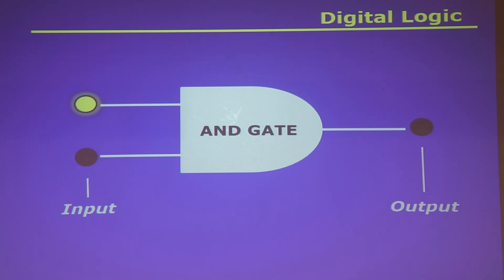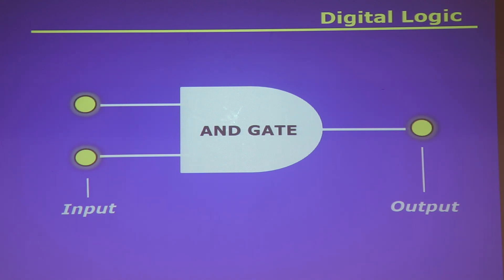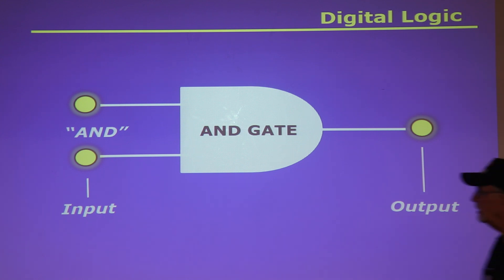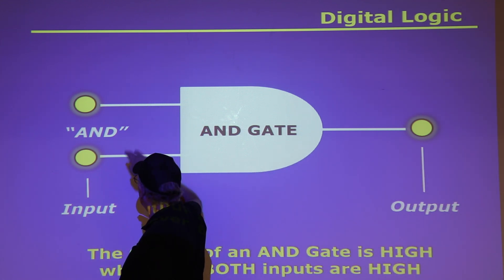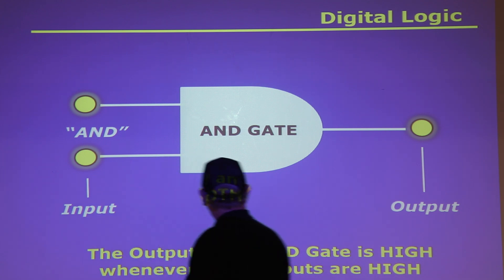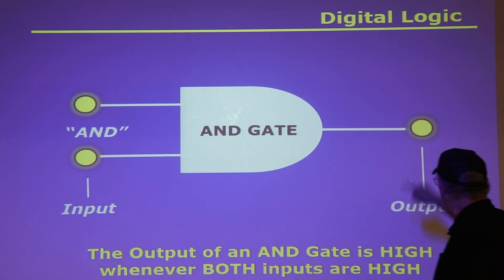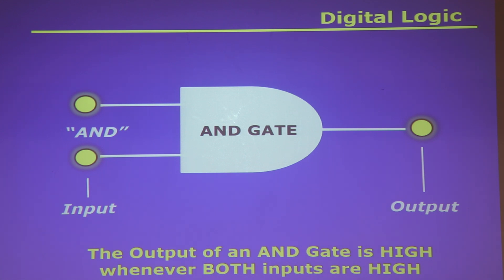When one input is high, there's no output — it doesn't satisfy the AND requirement. When both inputs are high, you get the output. High is usually a voltage level like three volts or five volts. That's how you use that to control the output.